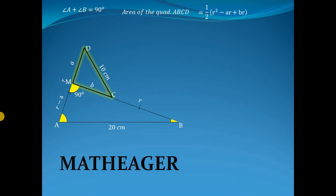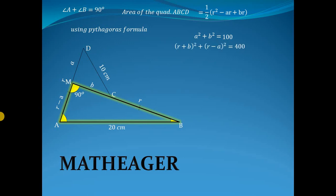From this smallest right-angled triangle using Pythagoras theorem, we have a squared plus b squared equals 100. And similarly from the biggest right-angled triangle, we have (r plus b) squared plus (r minus a) squared equals 400.